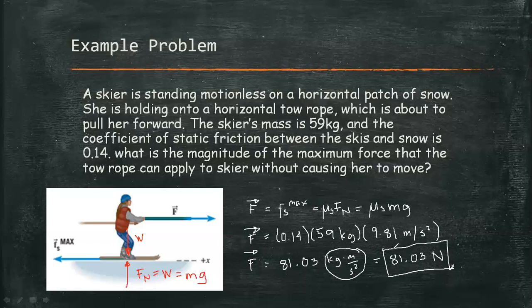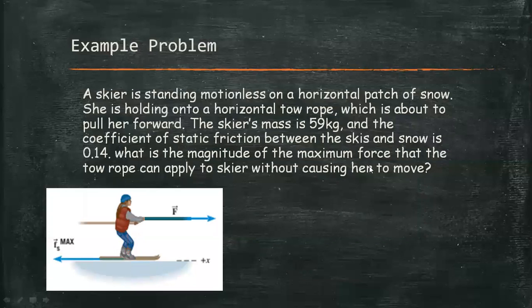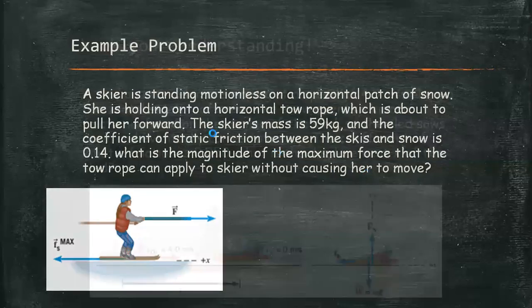The force is directed to the right. If the applied force is increased beyond 81.03 N, the skier will start to move forward. Now let's check your understanding by solving a practice problem.